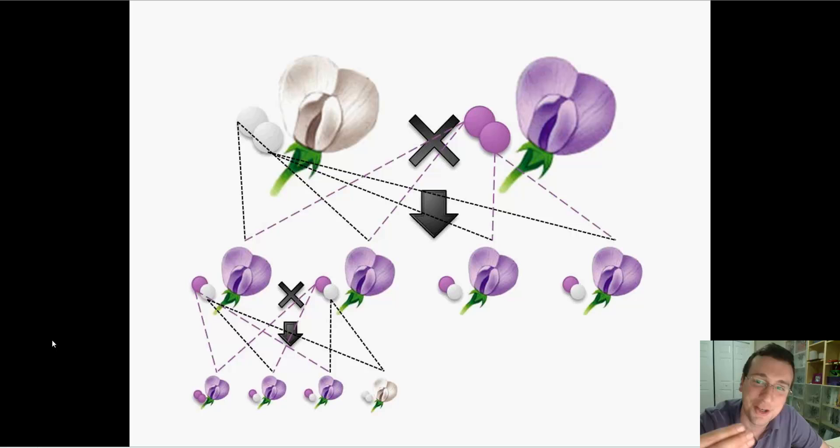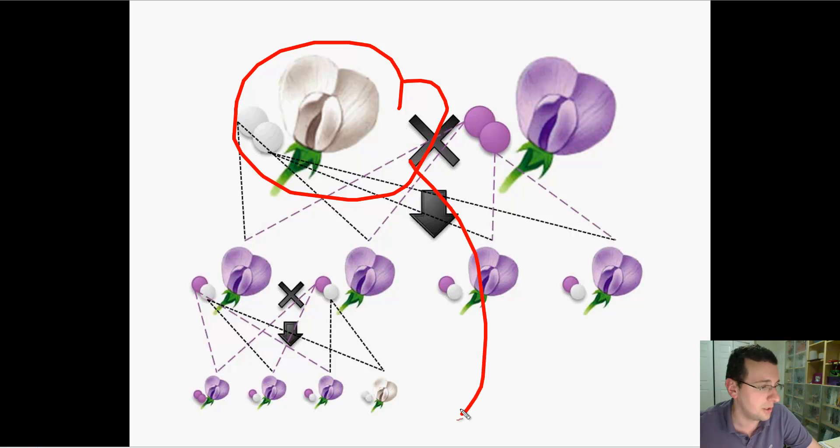Then he gets something completely different. Now he's going to get three flowers that look dominant, but here's the weird part: the white color that had disappeared in that generation comes back two generations later. The white flower actually skipped a generation. That tells him, whoa, hold on a second. How do you go backwards? That doesn't make any sense. If things blend, how do you go backwards?